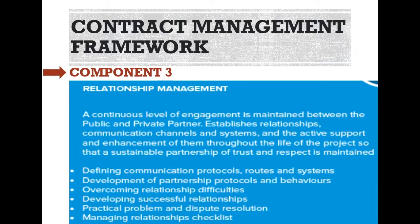Component three: Relationship management. A continuous level of engagement is maintained between the public and private partner. It establishes relationships, communication channels and systems, and the active support and enhancement of them throughout the life of the project so that a sustainable partnership of trust and respect is maintained. This includes defining communication protocols, routes and systems, development of partnership protocols and behaviors, overcoming relationship difficulties, developing successful relationships, practical problem and dispute resolution, and managing relationships checklists.